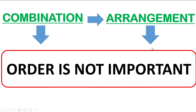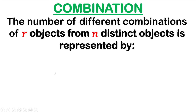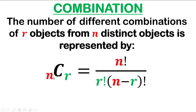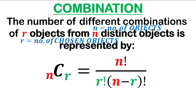When it comes to arrangement, the order in combination is not important. The number of different combinations of r objects from n distinct objects is represented by the formula: nCr, or the combination of n things taken r at a time, is equal to n factorial over r factorial times the quantity (n minus r) factorial, where n is the number of objects, r is the number of chosen objects, and r must be less than or equal to n but greater than or equal to 0.